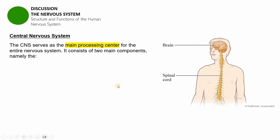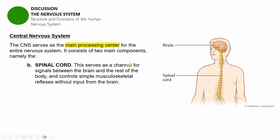The second part of the central nervous system is the spinal cord. Remember that the brain stem connects the brain and the spinal cord. The spinal cord serves as a channel for signals between the brain and the rest of the body, and it controls simple musculoskeletal reflexes without input from the brain. There are times when we need to respond as quickly as possible by tapping onto our spinal cords rather than our brains.